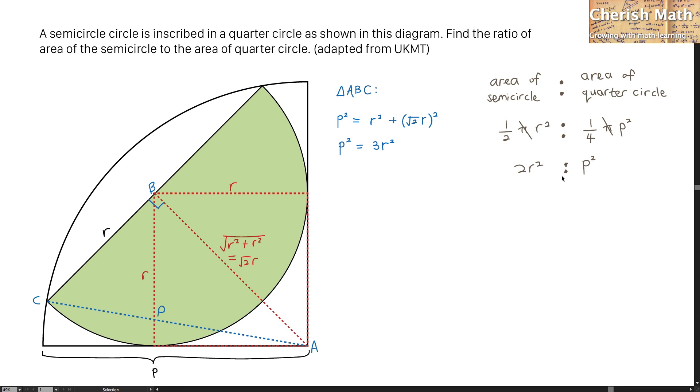I'm going to multiply by 4 in order to get 2R square to P square. And now, by substituting the value of P square as 3R square, this is what I get. And I'm going to simplify it. Eventually, the value turns 2 to 3.